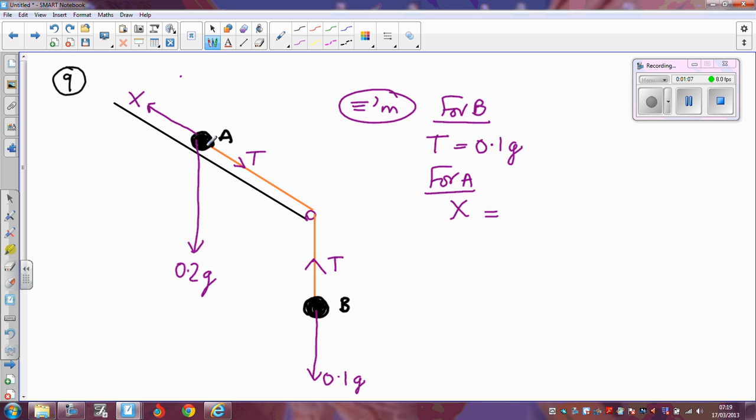Must equal the forces which are acting down the slope, so acting down the slope you've got t, but you've also got the component of the weight. So the slope makes an angle of 10 degrees with the horizontal, so that angle there is 10. This angle here, then, must be 80 degrees.